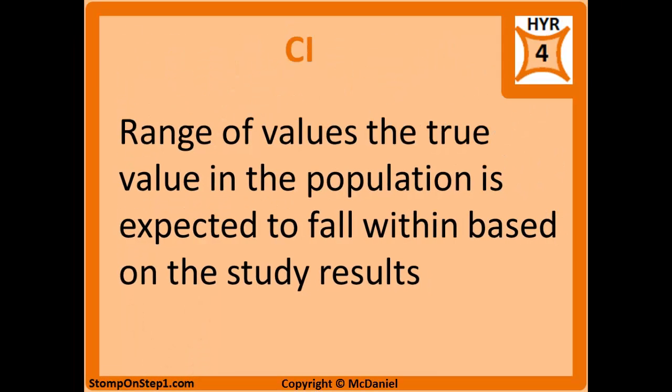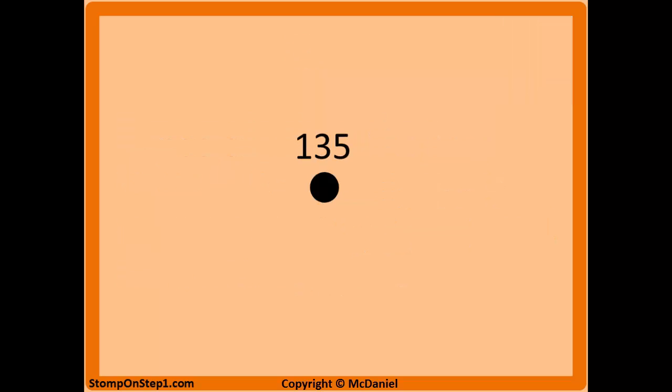The definition for confidence interval or CI is the range of values that the true value in the population is expected to fall within based on the study results. The confidence interval is based on a certain level of confidence and if you change the level of confidence, the width of the interval changes.